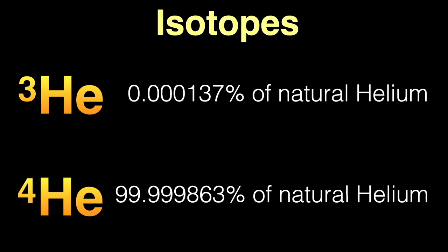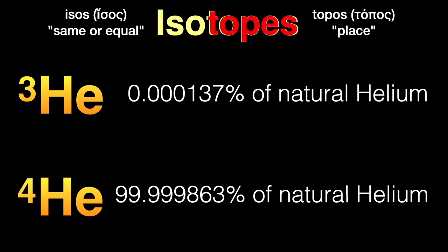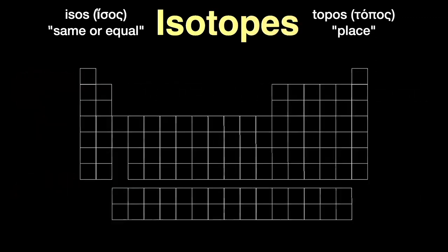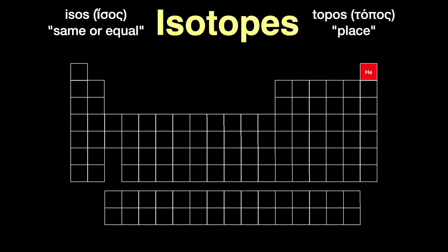By the way, the word isotope comes from the Greek, isos, meaning same or equal, and topos, meaning place, since all these various forms of helium occupy the same place in the periodic table.